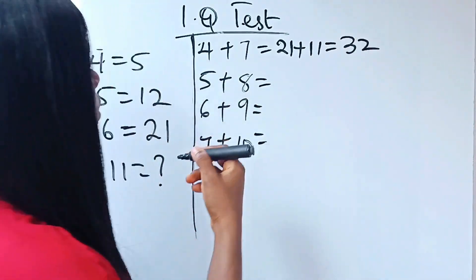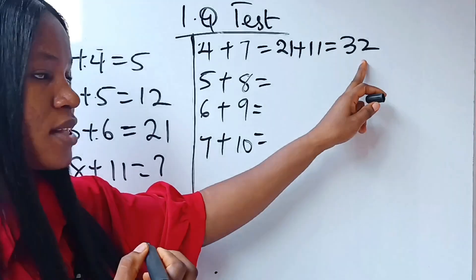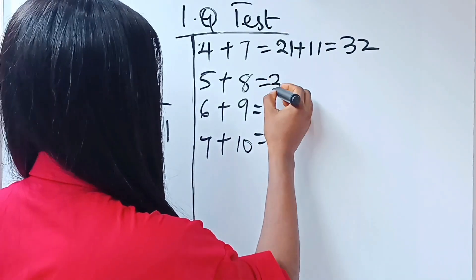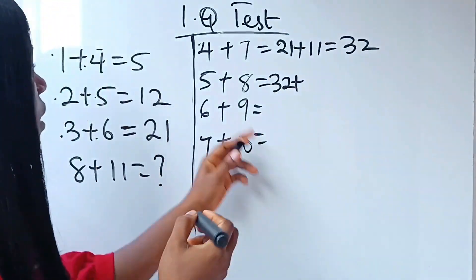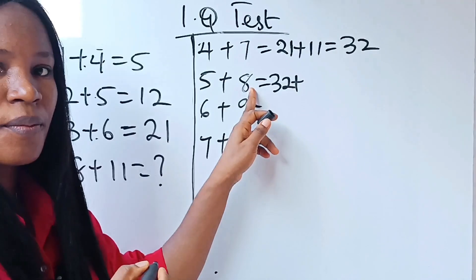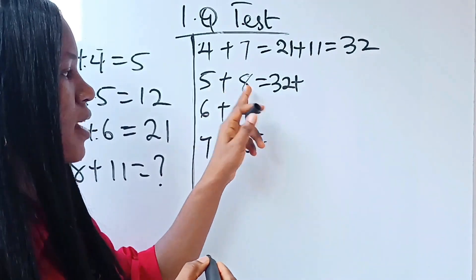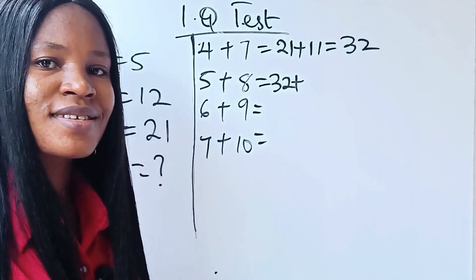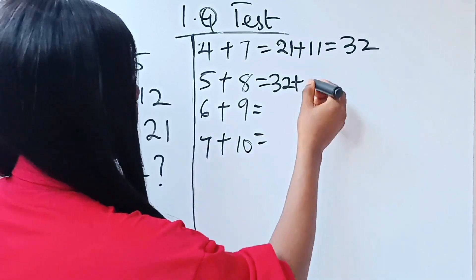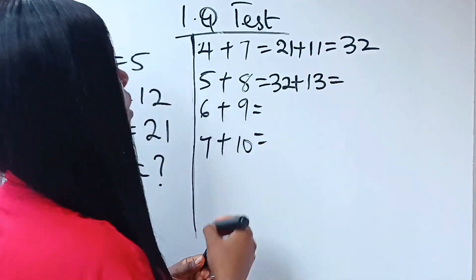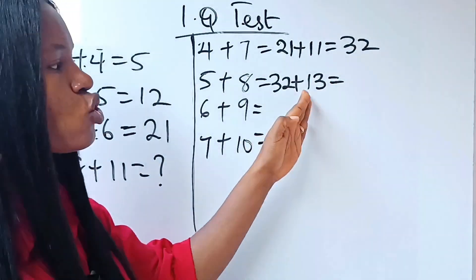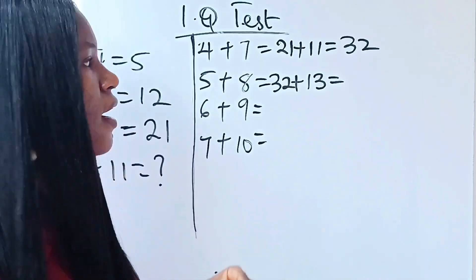So, then for this, this should be this 32, right? According to them, plus 5 plus 8, 5 plus 8 will give us 13. Okay. Now, 32 plus 13 is 45.